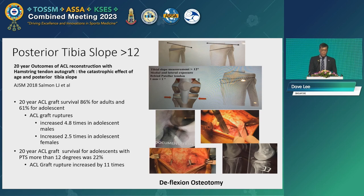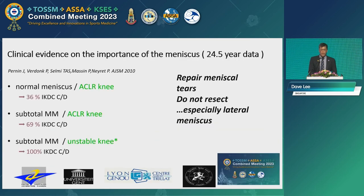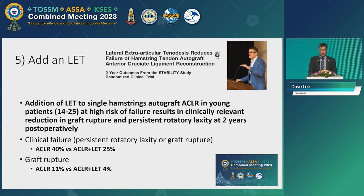This is a paper from Sydney which talks about the importance of paying attention to the tibial slope as well as young patients, because the grafts will fail very significantly. Graft re-rupture increases by up to 11 times when patients are young and you have a high slope. So it's important in certain cases to address the slope, and also there is data on why we should preserve the meniscus — because if you remove the meniscus and do an ACL reconstruction, the results are not as good as if you preserve it. This is from long-term data.